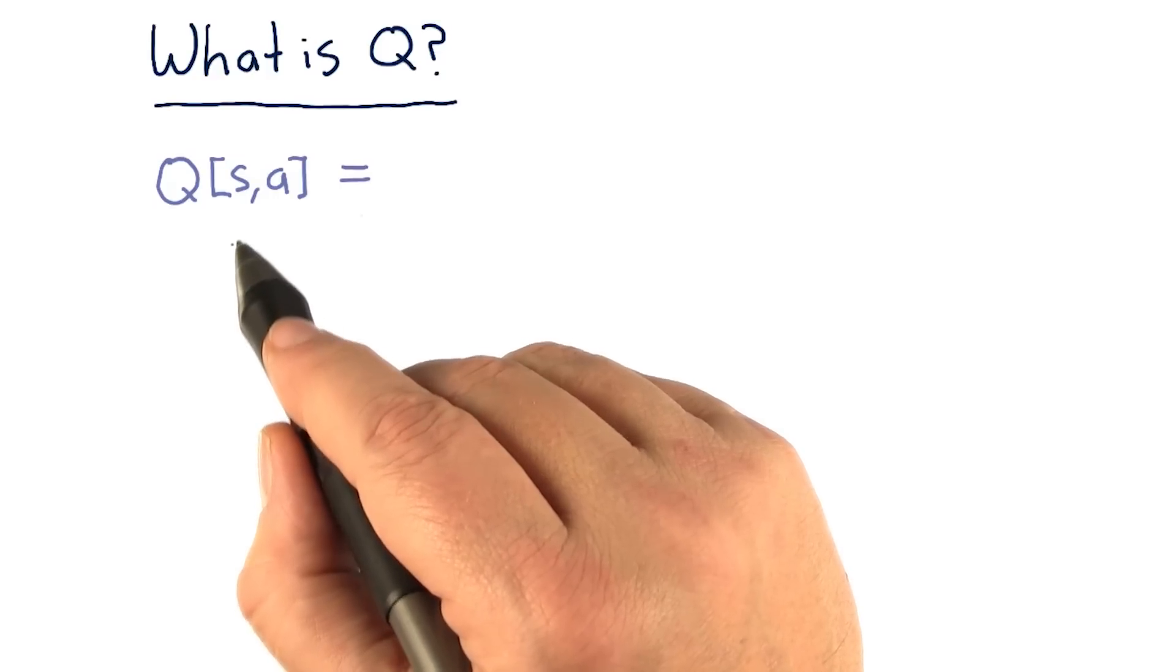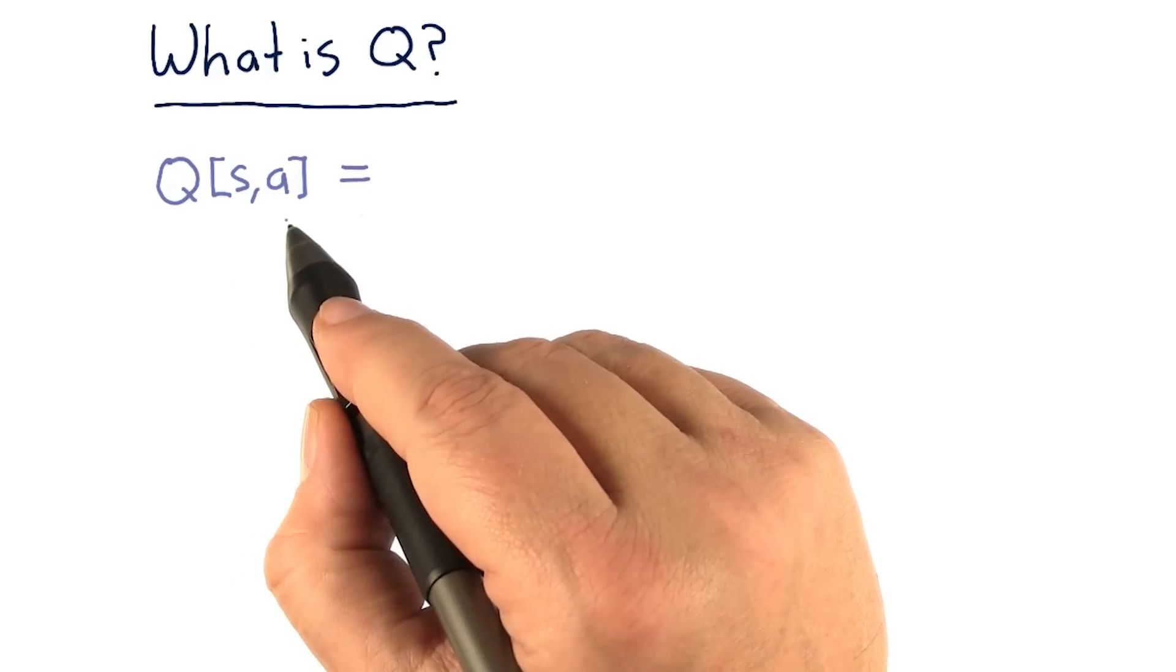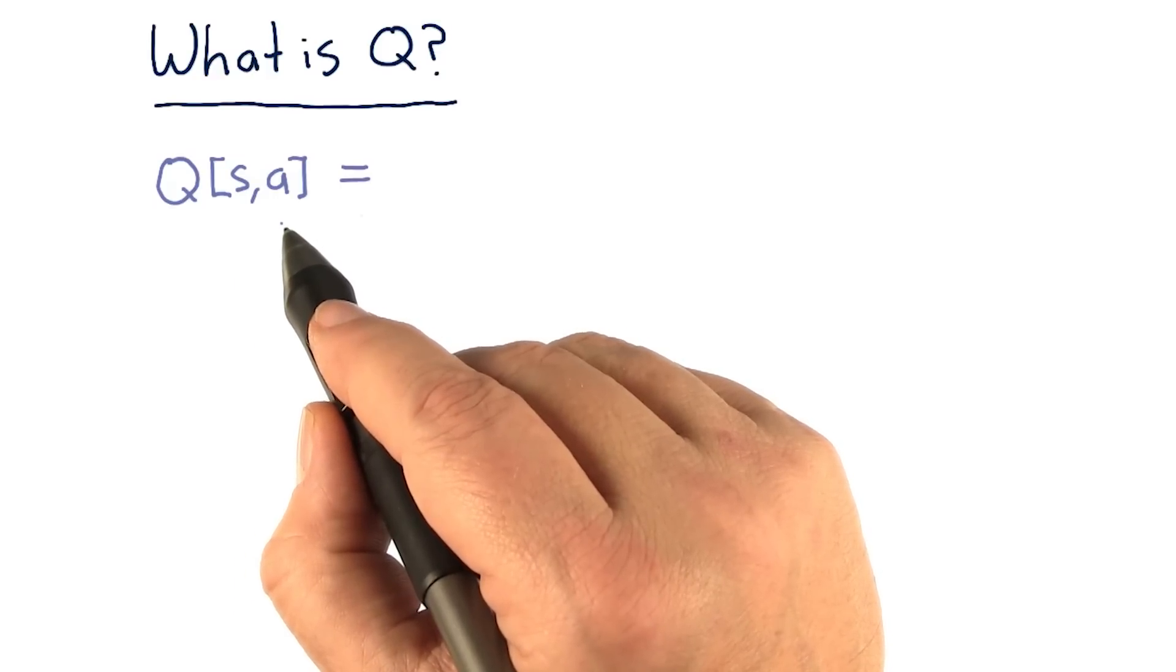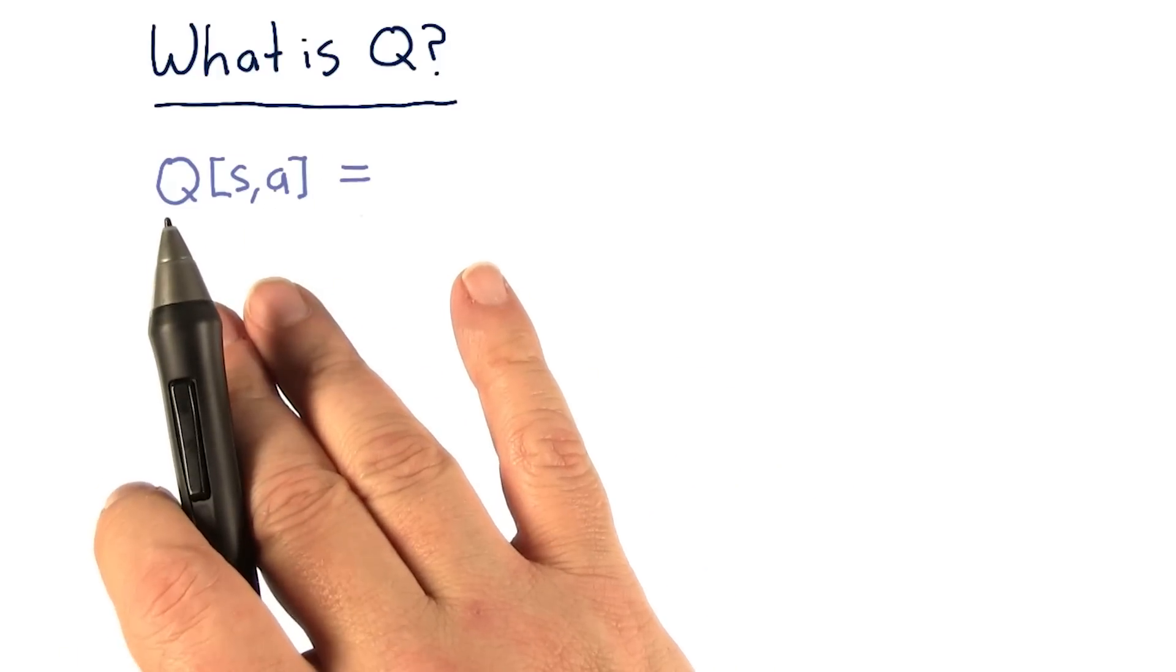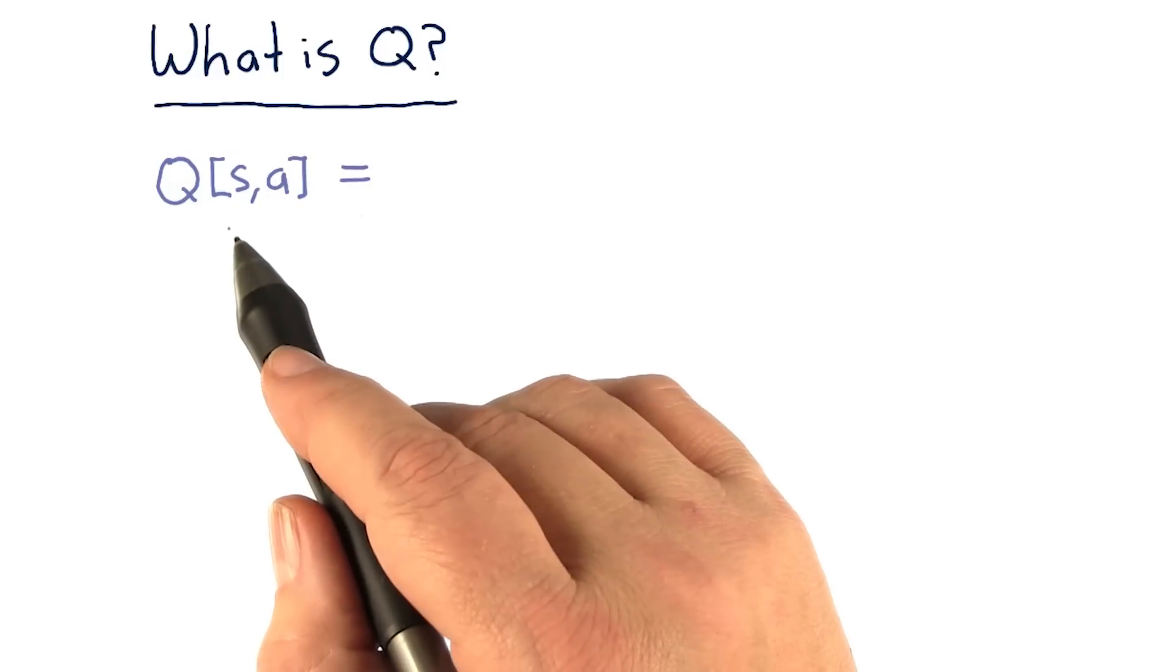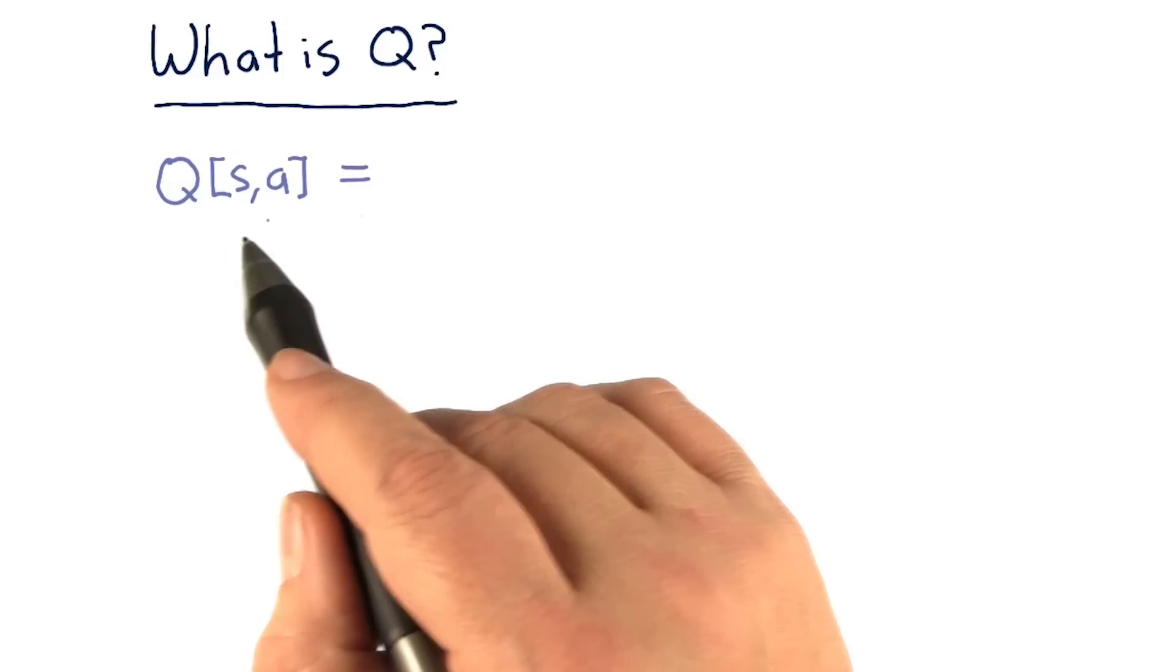So S is the state that we're looking at, and A is the action we might take. Q represents the value of taking action A in state S.